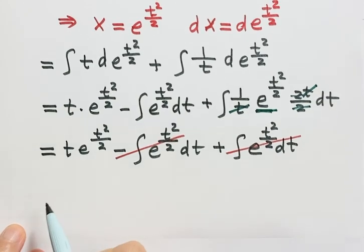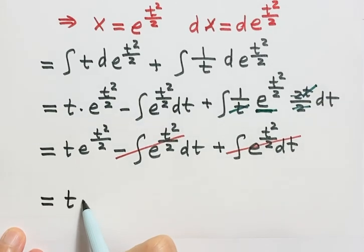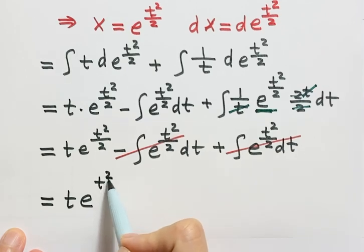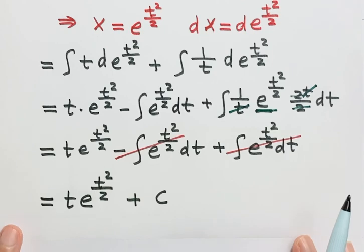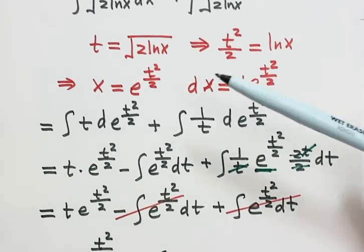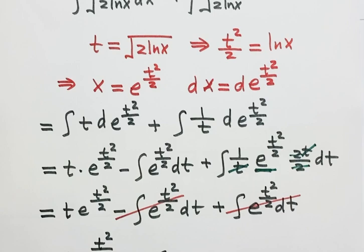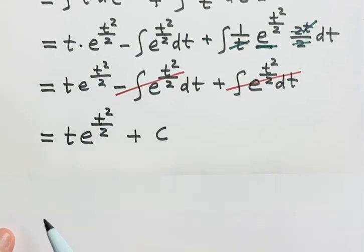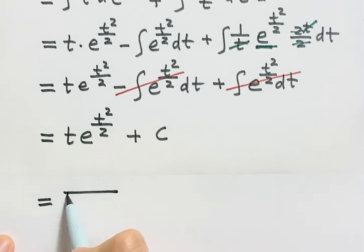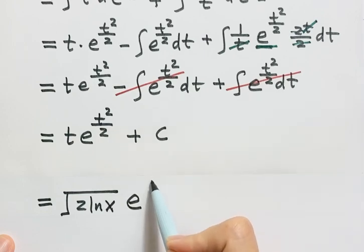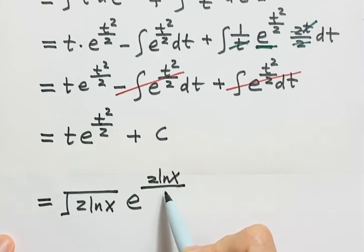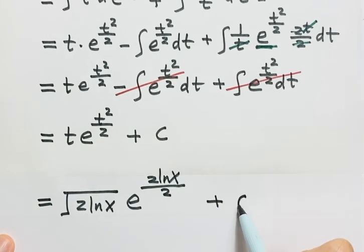So then we're left with just the first term: t times e to the power t squared over 2, plus constant C. Now we need to back-substitute for what t originally was. Here t is the square root of 2 log x. So we have the square root of 2 log x times e to this power. t squared is 2 log x over 2, then plus constant C.